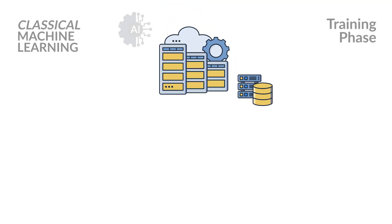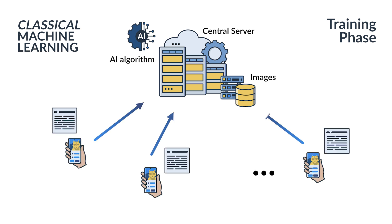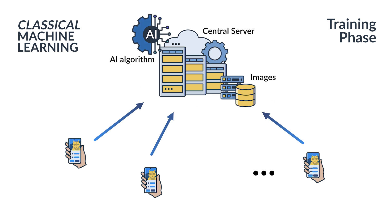In classical machine learning, a computing element, usually with high computational and memory resources, receives information from multiple devices. With this information, this central element trains a learning model. When the model is trained and ready to be used, any device sends its query to the central element and, after some calculations, the device receives the answer.